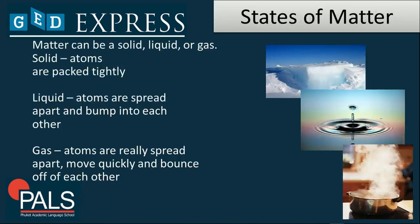Now we have the states of matter. Matter can be identified as solid, liquid, or gas, depending on the arrangement of atoms. For example, if the particles are packed tightly, that could be identified as a solid. If they are spread apart and bump into each other slightly, that could be identified as a liquid. Whereas if they are spread apart, move quickly, and bounce off of each other, that can be identified as a gas.